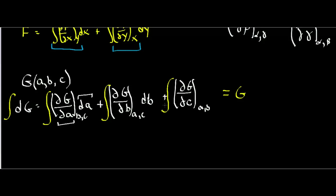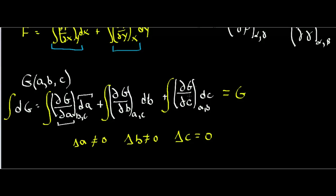That may seem incredibly complicated, but there are cases where one of these partial derivatives goes to zero. For example, if delta A is not zero and delta B is not zero, but C is not changing, then dC equals zero and that whole term cancels out to zero — you're only left with two terms. In some very complicated problems, two whole terms can go to zero and you're only left with one.